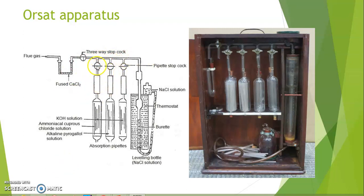In the third absorption chamber, cuprous chloride solution is used to absorb carbon monoxide. If carbon monoxide is present, it is absorbed here. We can thus determine the individual composition of each gas in the flue gas — carbon dioxide, oxygen, carbon monoxide, and hydrogen.